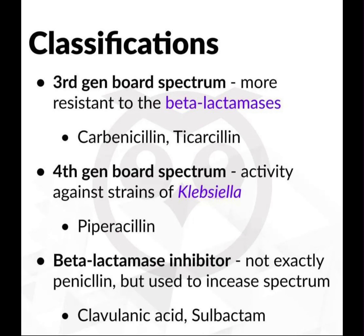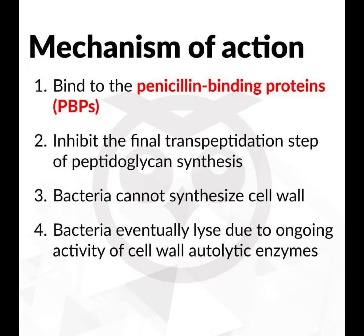Fourth-generation broad-spectrum penicillins are used against strains of Klebsiella. Drugs include piperacillin. Beta-lactamase inhibitor penicillins are not exactly penicillins but are used to increase the spectrum. These include clavulanic acid and sulbactam.